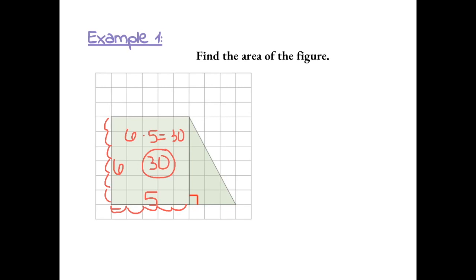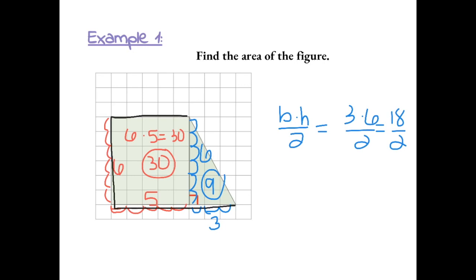To find the area of the triangle we have to do the base, which is 3, times the height, which is 1, 2, 3, 4, 5, 6. Base times height divided by 2. So the base is 3, the height is 6. That gives us 18 divided by 2 equals 9. So the area of the entire figure is 30 from the rectangle plus 9 from the triangle, which equals 39 units squared.